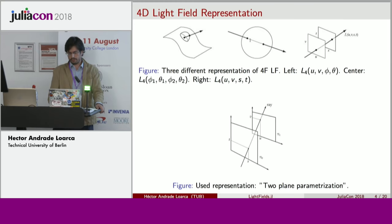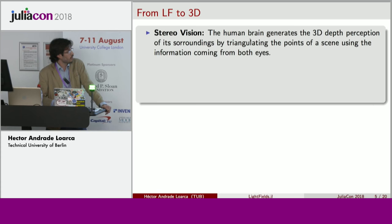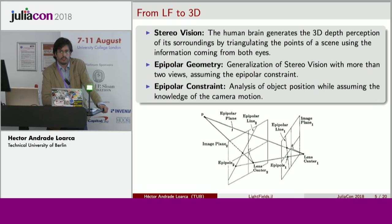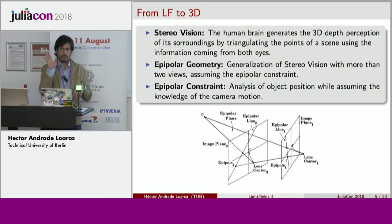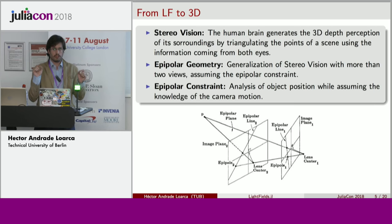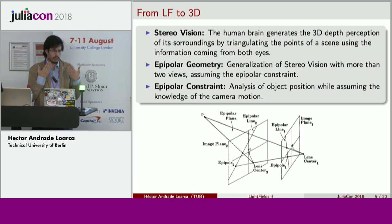You may ask what this has to do with 3D. The principle is based on stereo vision, which is how the human brain generates a 3D depth perception of its surroundings by triangulating the points of a scene using the information coming from both eyes. Having just one picture, you project the light rays in a plane and cannot recover the depth of the points you are looking at. But having two pictures, you can triangulate using the position of certain points in each of the planes — essentially the two eyes.